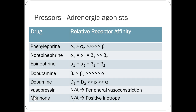Vasopressin is a common routine ICU choice as an adjunct. Most often I see norepinephrine used first, then vasopressin or phenylephrine added on top. Vasopressin is a peripheral vasoconstrictor that works through the vasopressin receptor system — a different mechanism from sympathomimetics — giving synergy. That's why it's a popular add-on. My approach would be norepinephrine first, then vasopressin as add-on.